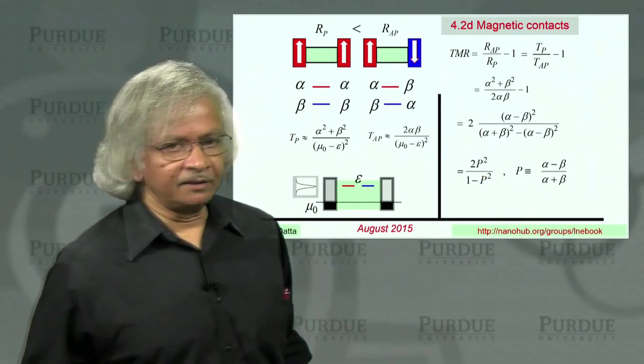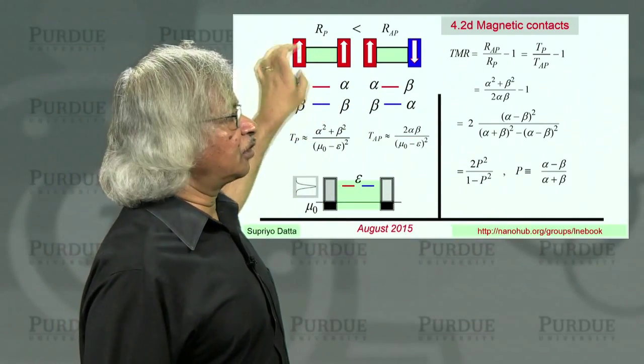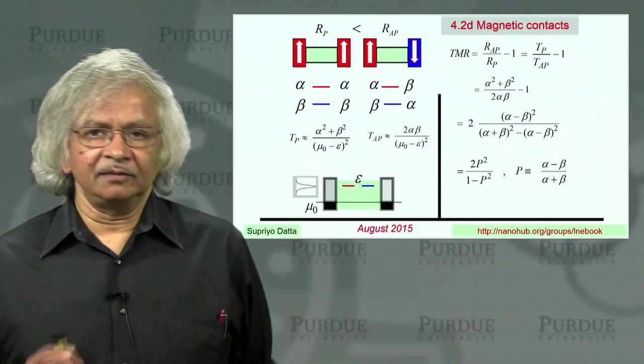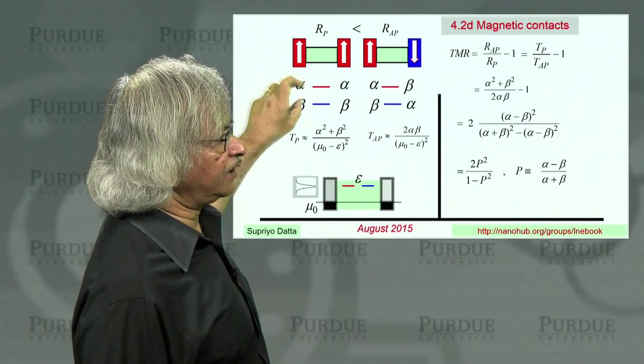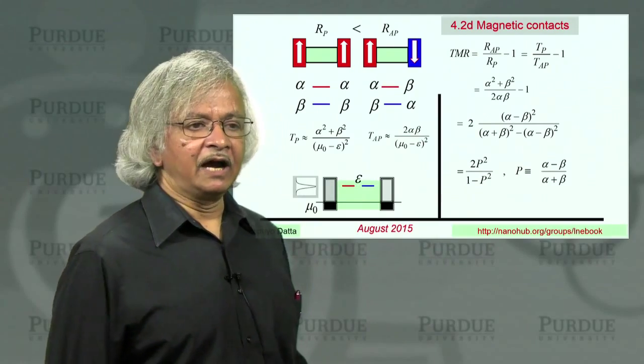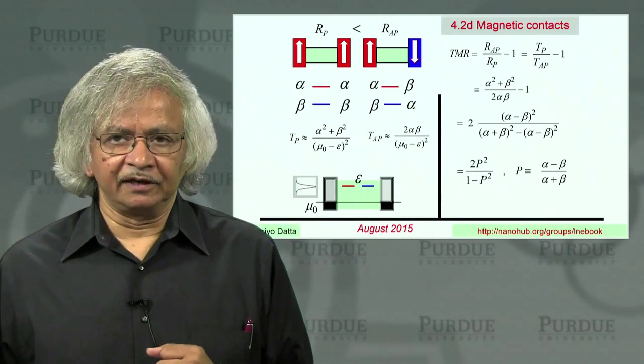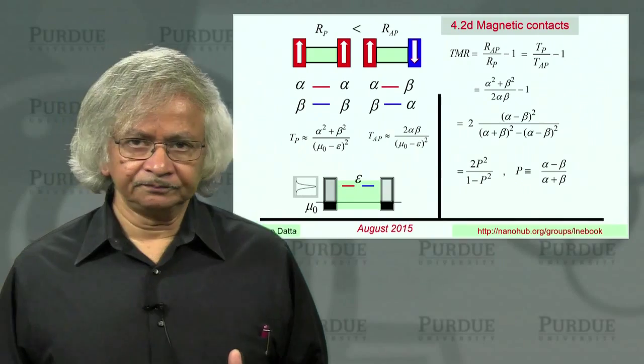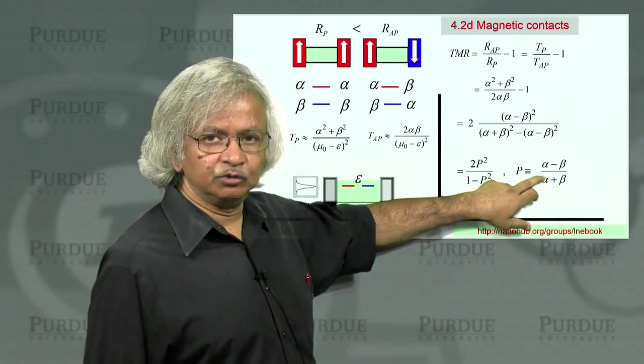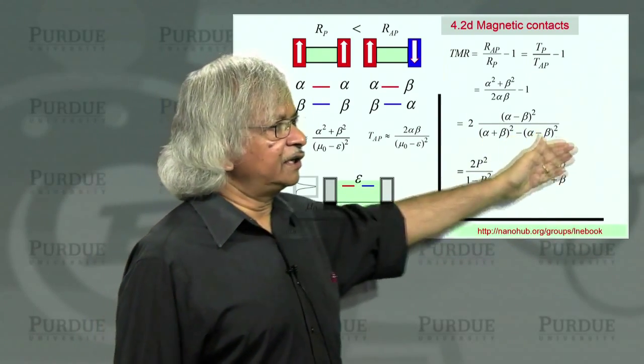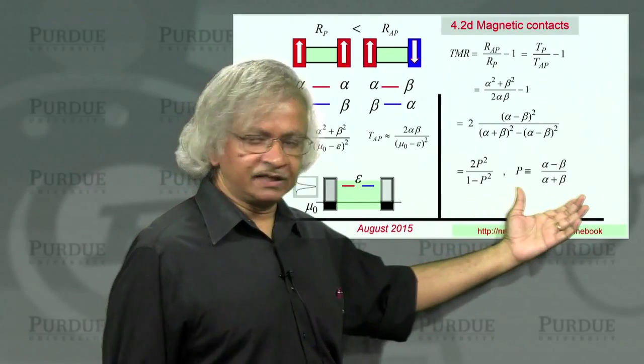And this is a very standard result. That is, this is something people use widely, that what is p? Well, that p tells you how good your contact is in terms of discriminating between upspins and downspins. You see, that discrimination is reflected in the difference between alpha and beta. So this p is a measure of that. Ideally, what you'd like is beta to be 0. That is, a contact should only let one type of spin get through and not the other type at all. And people are looking continually for magnets, for new materials which would actually do that.